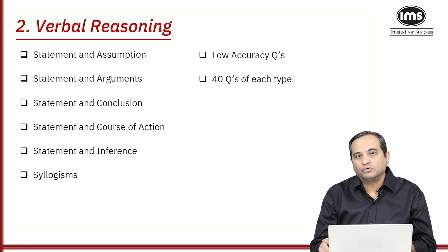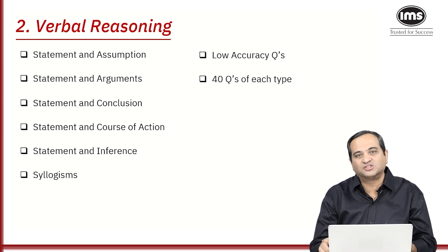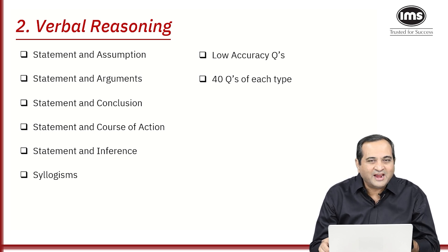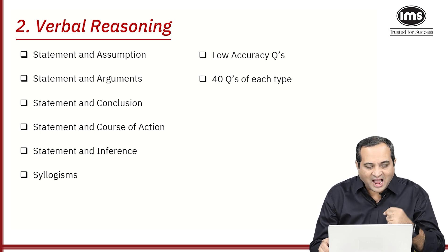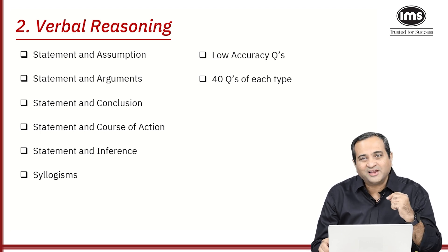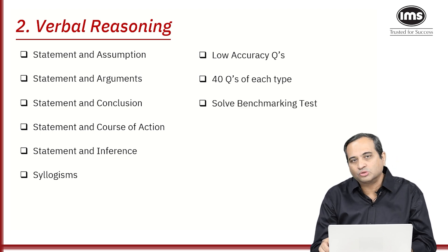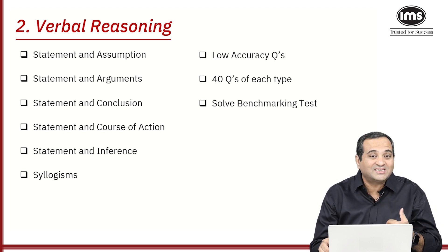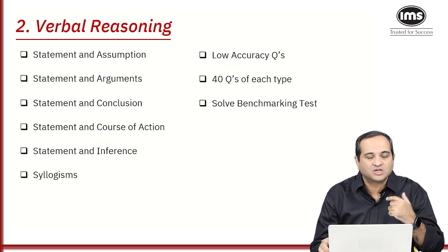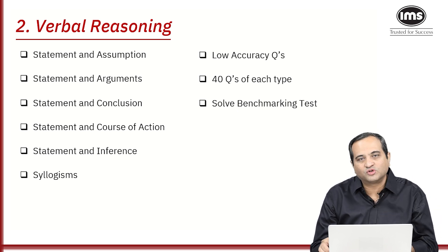What I want you to do is solve a minimum of 40 questions from each of these topics. If you can solve 40 questions of each type, you will get an idea of how to tackle such questions. For example, start solving statement and conclusion type questions, then solve the benchmarking test on that topic. Once you get a hang of one type, move on to the second type and so on.